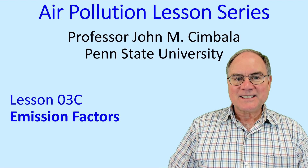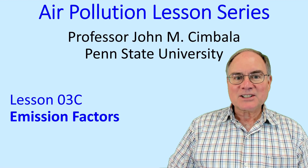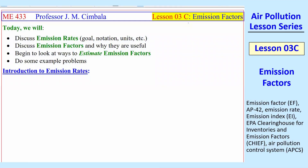Welcome to Lesson 3C, Emission Factors. By way of introduction, I first want to make a note of how to spell emission rates and emission and emitted. These words have one M and two T's or two S's. So make sure you spell them right — we write 'emission' and 'emitted' this way.